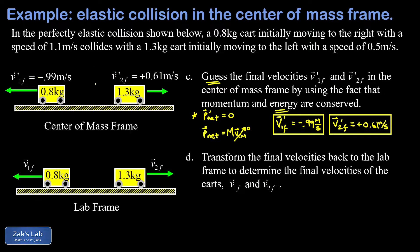We know what the final state looks like when running to the right at 0.110 meters per second, and we just imagine putting on the brakes. For the 0.8 kilogram car, in the center of mass frame it's moving left at 0.99 m/s, but our running makes it look faster than it is in the lab. So V1 final in the lab frame is negative 0.99 plus 0.11 meters per second, giving negative 0.88 meters per second.